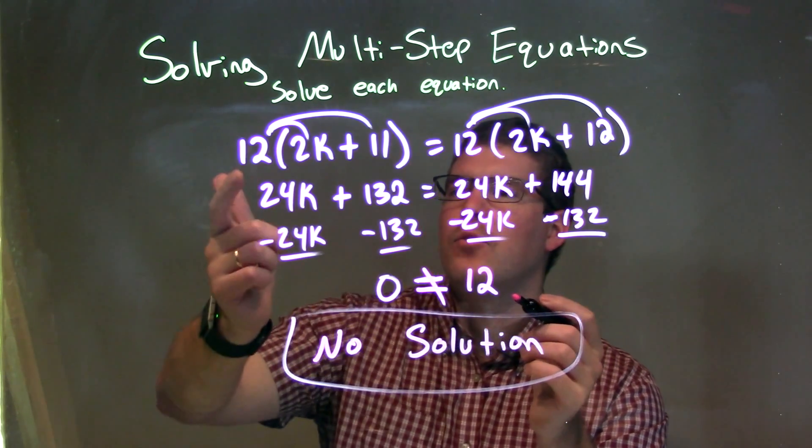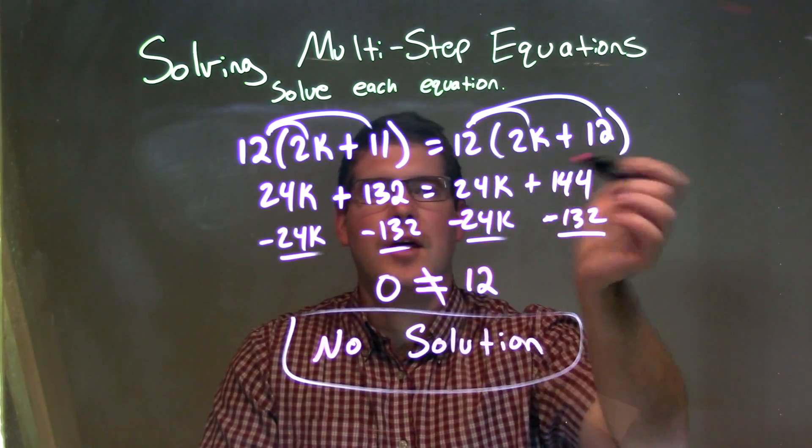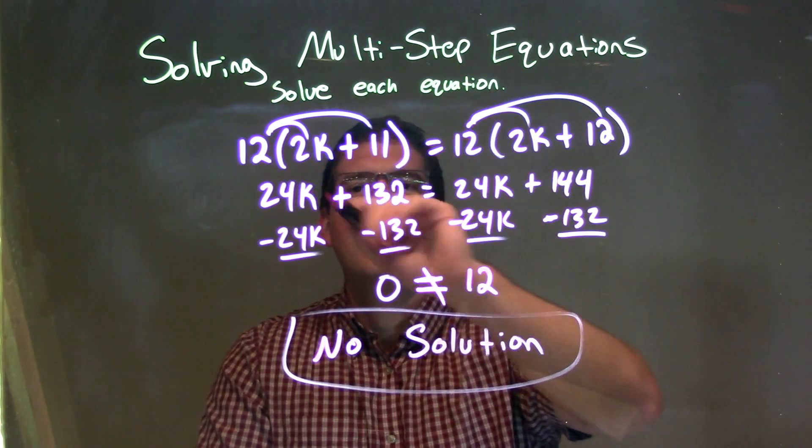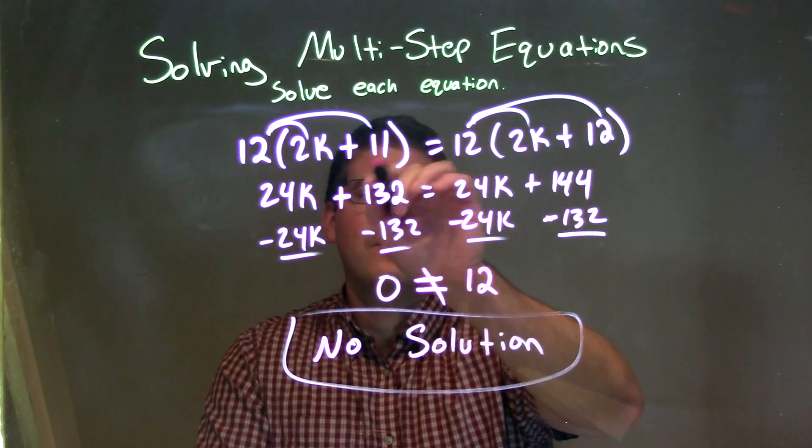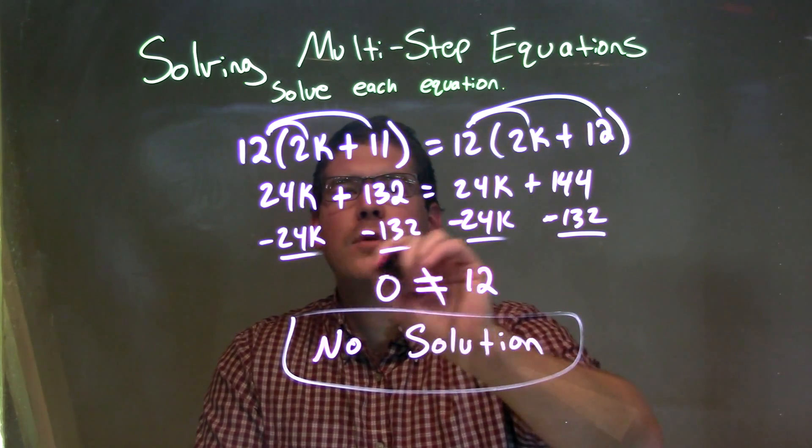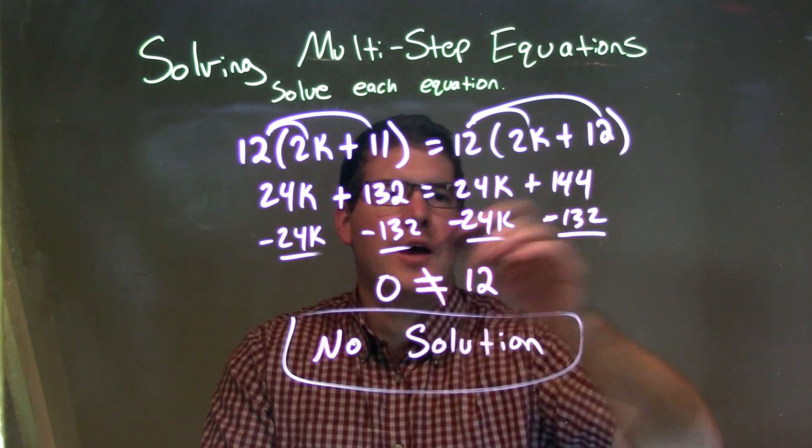So let's recap. We're given 12 times 2k plus 11 equals 12 times 2k plus 12. I distributed to both parentheses, the 12 to the first one, and this 12 to the second parentheses there. Giving me 24k plus 132 equals 24k plus 144.